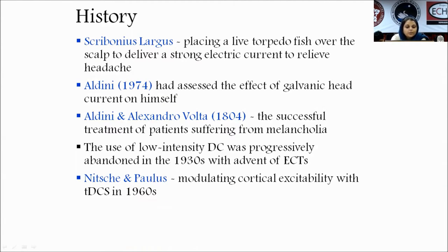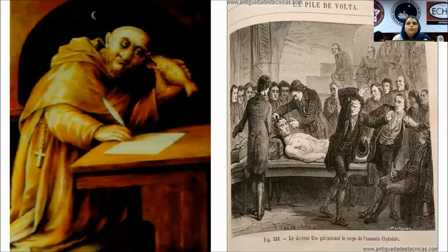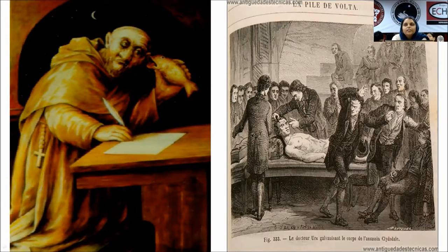However, Nishi and Polus, because of their work, modulating cortical excitability by tDCS came into effect and broader research was done on that. This is historical — the torpedo fish used by Largus stimulating his scalp represents the earlier brain stimulation therapy.